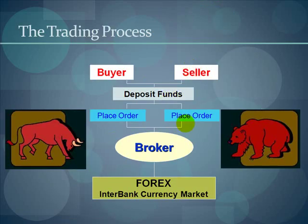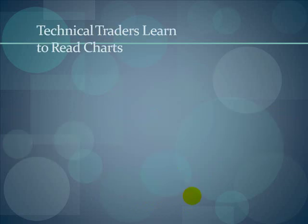The process is: both the buyer and seller deposit funds with the broker, then both place an order — one is a bull, one is a bear; one thinks the market's going up, the other thinks it's going down. That's why we have a market. You and I don't have a direct relationship with the interbank currency market, but the broker does, so he brokers our trades. He doesn't care whether you buy or sell — he just brokers it to the interbank market and earns the spread.